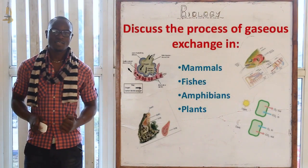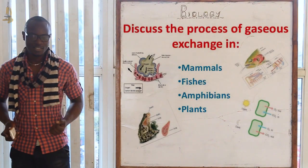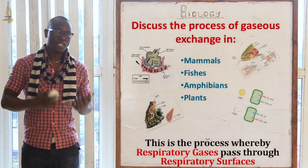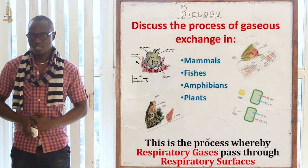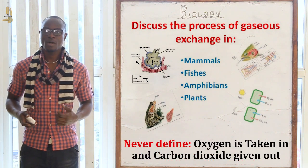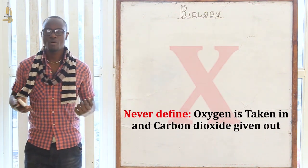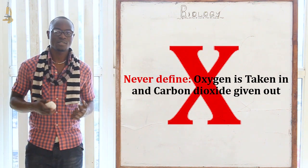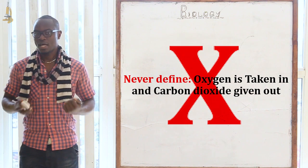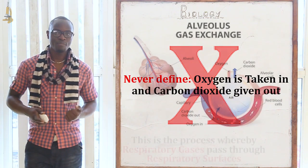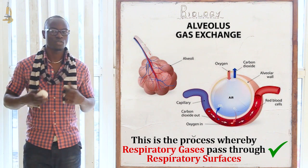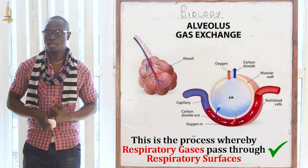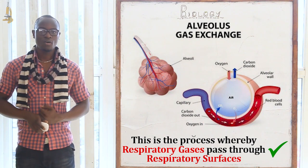Hello there and welcome to this class where we discuss gaseous exchange. Gaseous exchange is defined as the process whereby respiratory gases pass through respiratory surfaces. You should never define gaseous exchange as the process where oxygen is taken in and carbon dioxide is given out, because plants take in carbon dioxide and give out oxygen. The best definition is the process where respiratory gases — oxygen and carbon dioxide — pass through a respiratory surface, such as the liver or the gills of a fish.